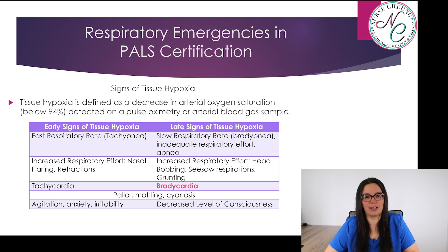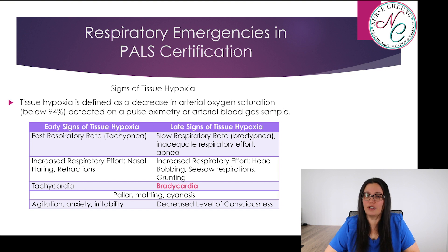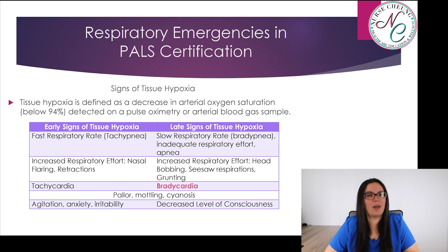Late signs of tissue hypoxia include a slow respiratory rate — bradypnea — inadequate respiratory effort, or apnea. You may still see increased respiratory effort, but this time with head bobbing, seesaw respiration, or grunting. Bradycardia and decreased level of consciousness are noted. You might also note pallor, mottling, and cyanosis in both early and late respiratory emergencies.